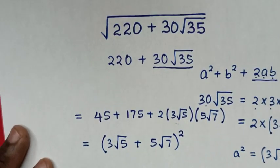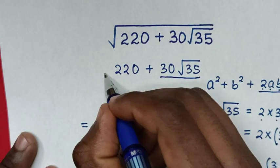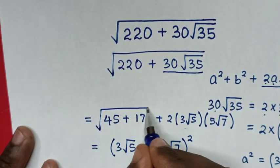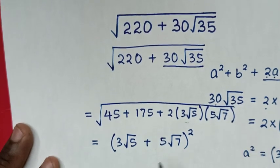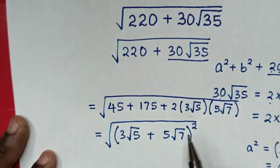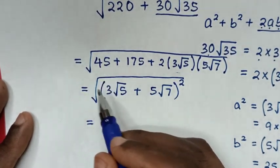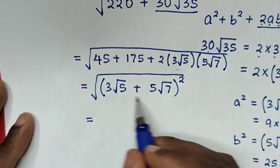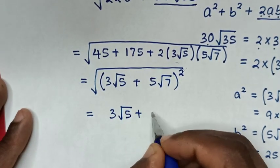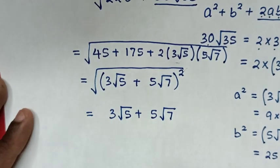Recalling that this expression was under a square root, we apply the square root to both sides. The square root cancels with the square, giving the final answer: 3 square root of 5 plus 5 square root of 7.